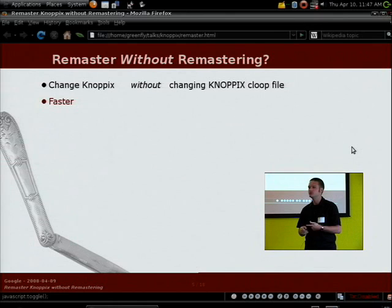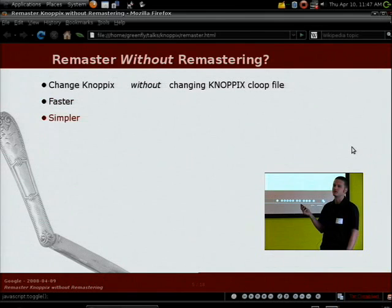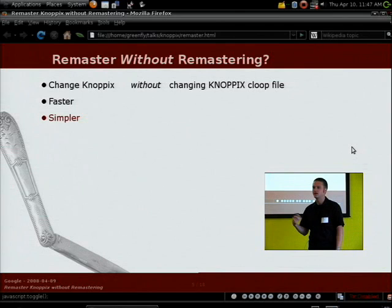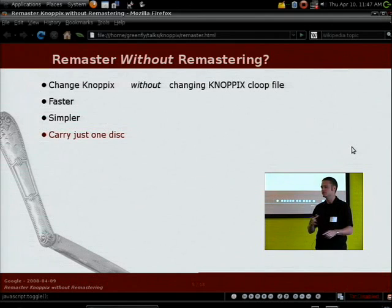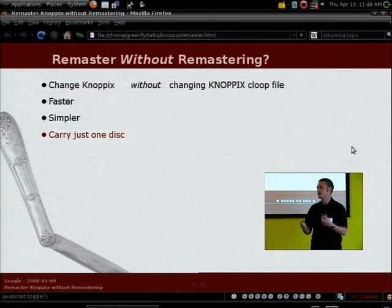It's a lot faster — most of these changes take only a couple of minutes to do and try out. It's simpler, so you're less likely to make a mistake, and even if you do, the iterations are much faster. Plus you can just carry one disk around. Most of these remastering processes can be stored on a separate USB drive. Instead of having five or six different live CDs, you just have one Knoppix CD and your USB key with all the different configurations you've made.